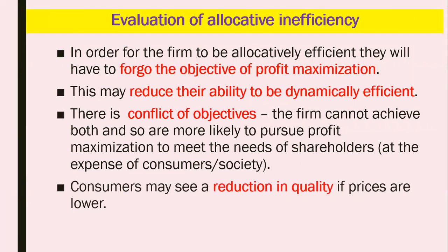Evaluation of allocative inefficiency: in order for the firm to be allocatively efficient, it will have to forgo the objective of profit maximisation, which is unlikely in a privatised firm opened up to the disciplines of the free market. This may reduce their ability to be more dynamically efficient. There is a conflict of objectives — the firm cannot achieve both, and so it is more likely to pursue profit maximisation to meet the needs of shareholders at the expense of consumers or society.